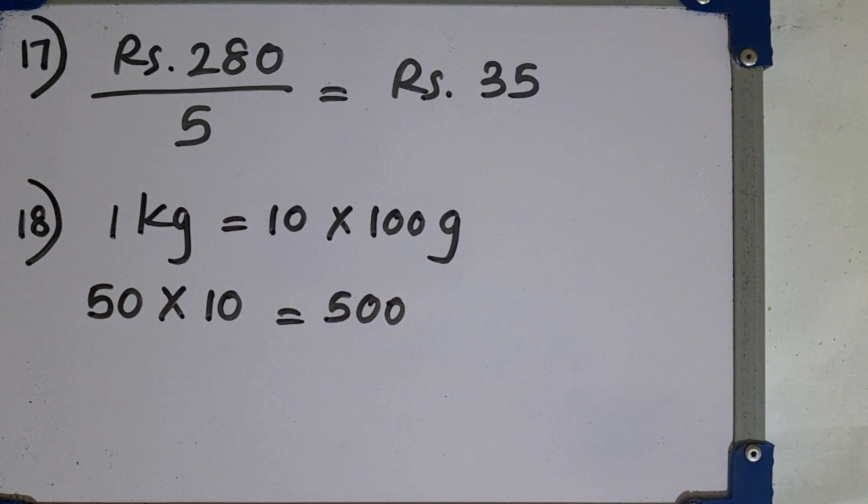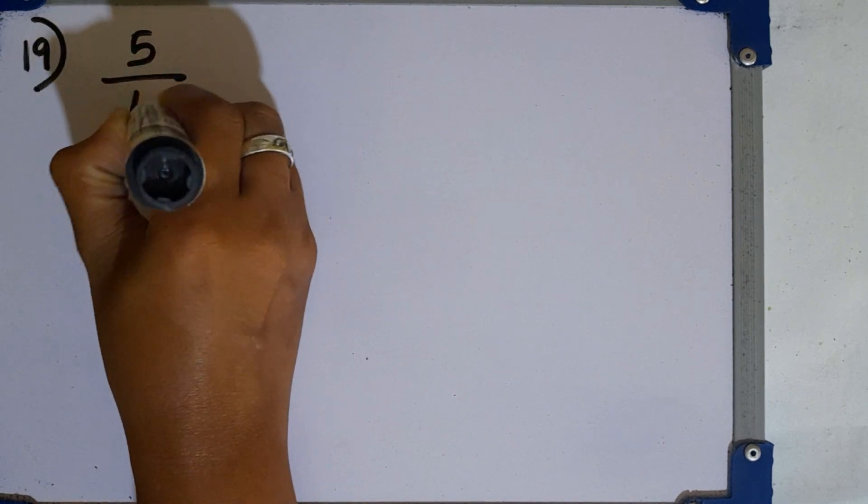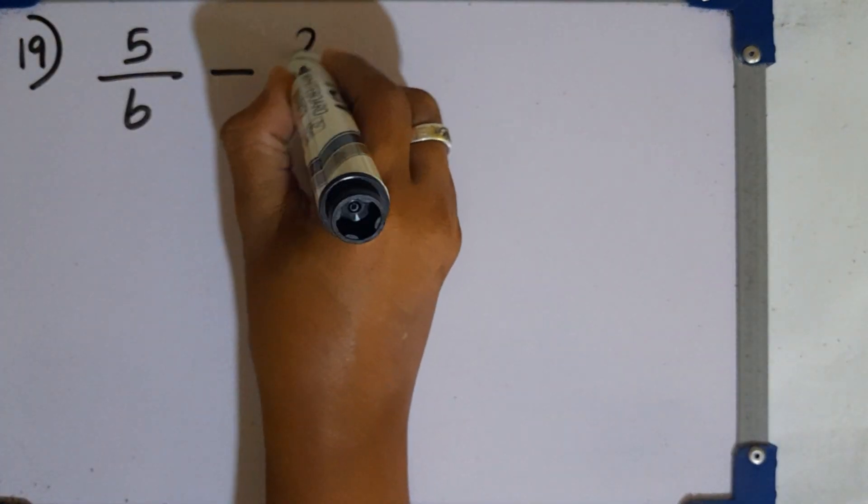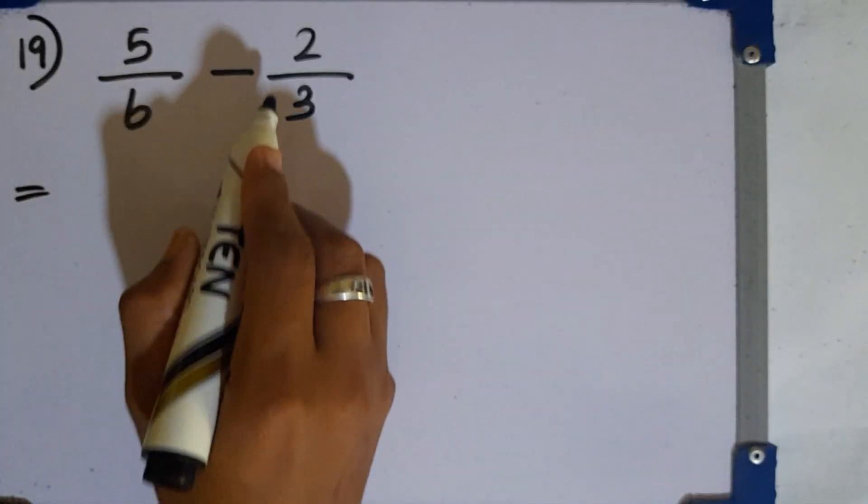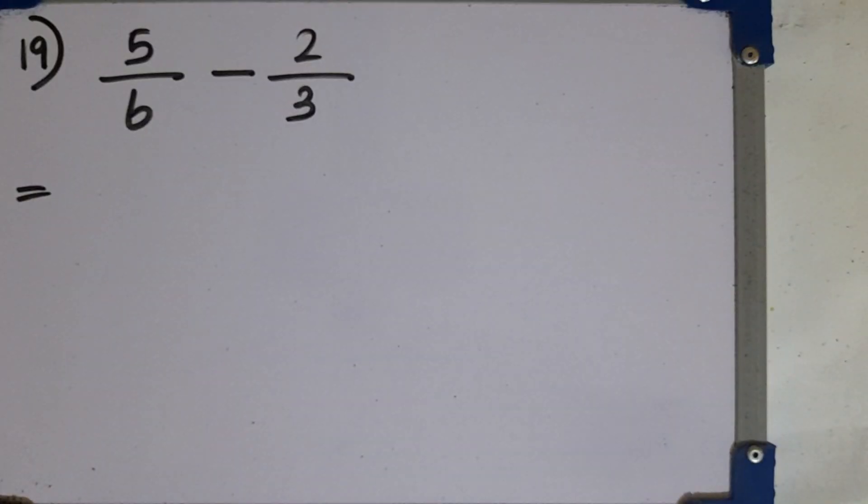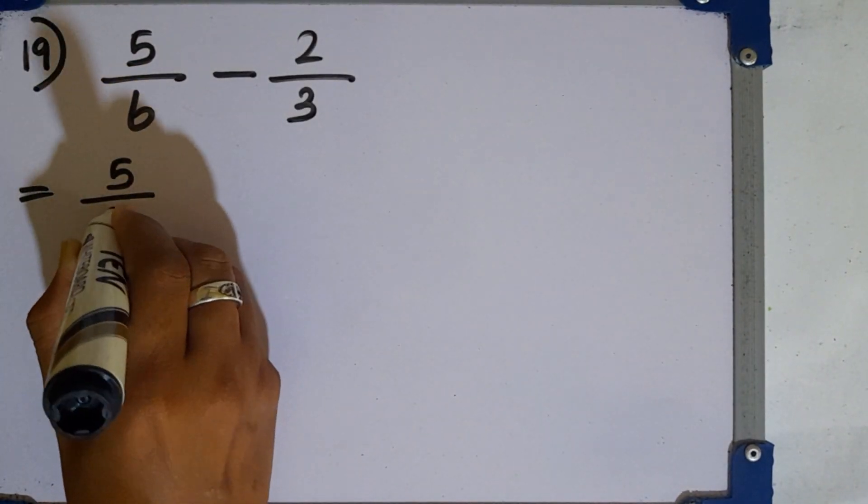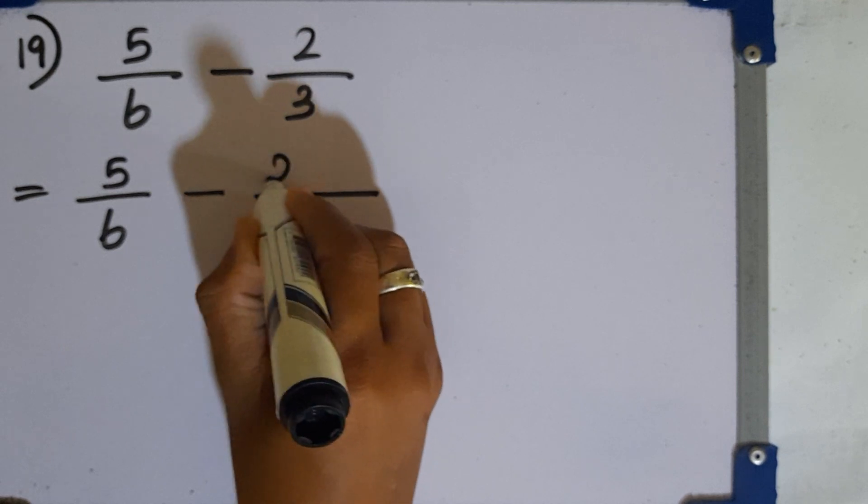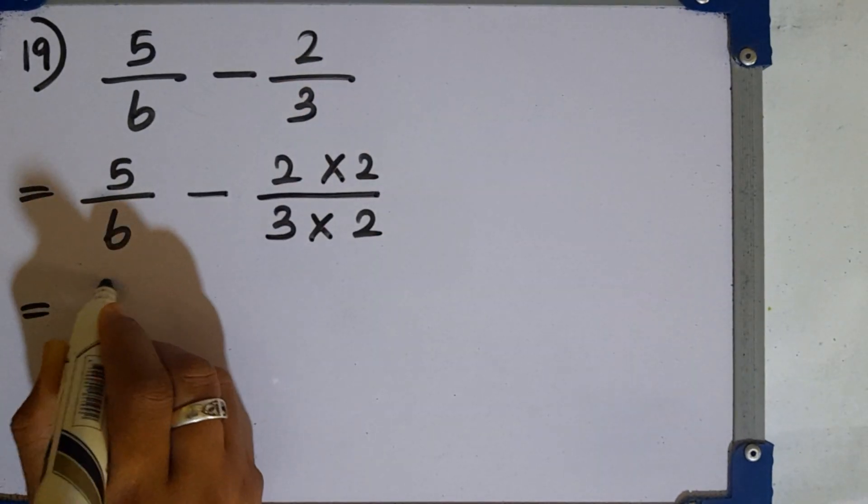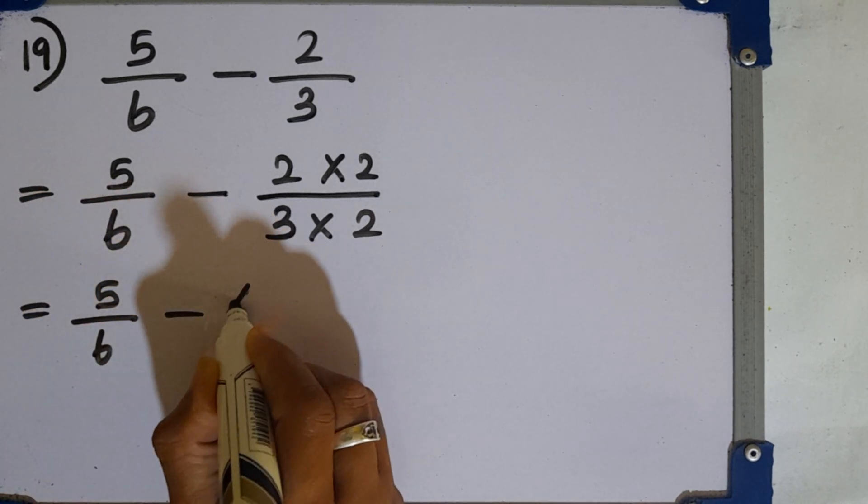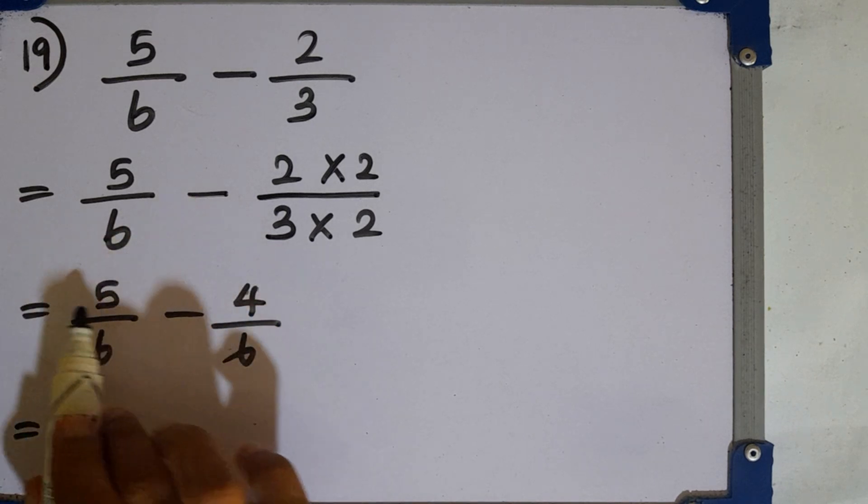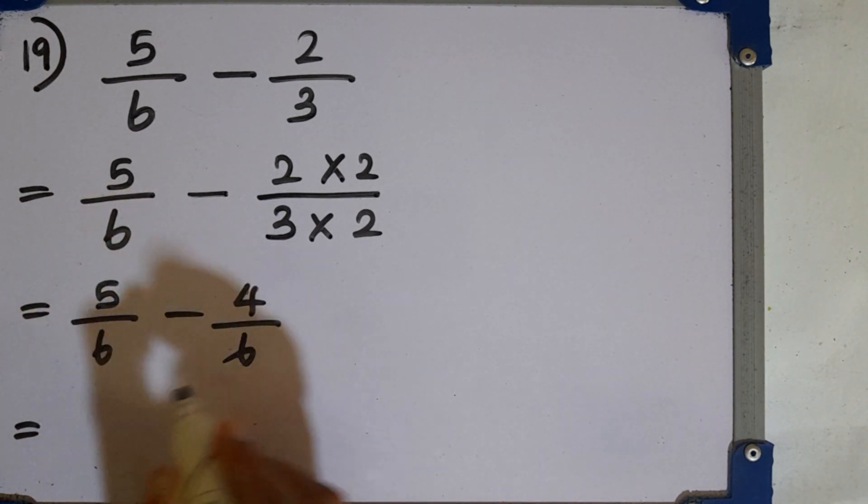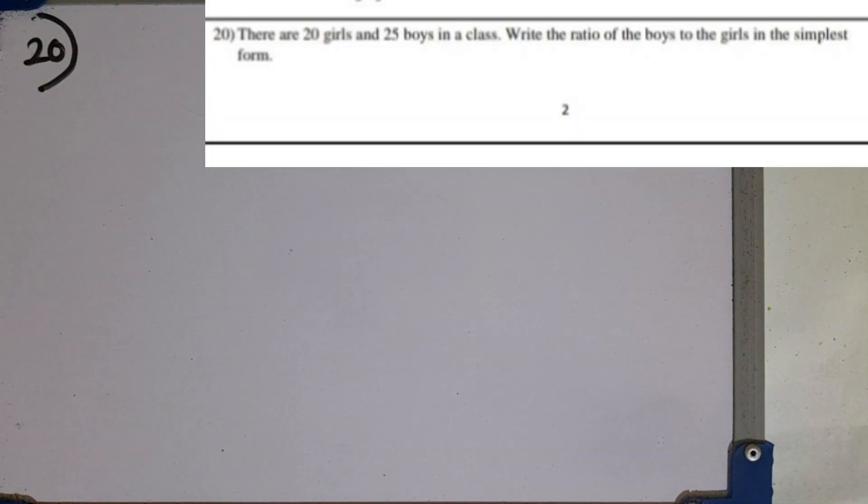Question number 19. We are given these two fractions to simplify. 5 over 6 minus 2 over 3. We can take equivalent fractions as the denominators are not equal here. We can multiply this fraction by 2. Then you get 5 over 6 minus 4 over 6. Then you can simplify the two numerators here 5 minus 4 is 1. So 1 over 6 is the answer.